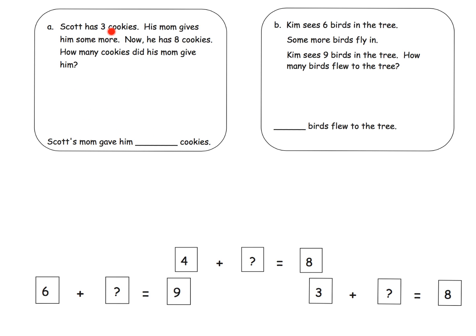So let's talk about the problems themselves. So this says Scott has 3 cookies. His mom gives him some more. Now he has 8 cookies. How many cookies did his mom give him? So we need to look down here and figure out, well, which one of these stories matches that? In this case, this one does. 3 cookies. 3 cookies. His mom gives him some more. There's our question mark. Now he has 8 cookies. There you go. In this case, now seems to be like a key word that says equal.